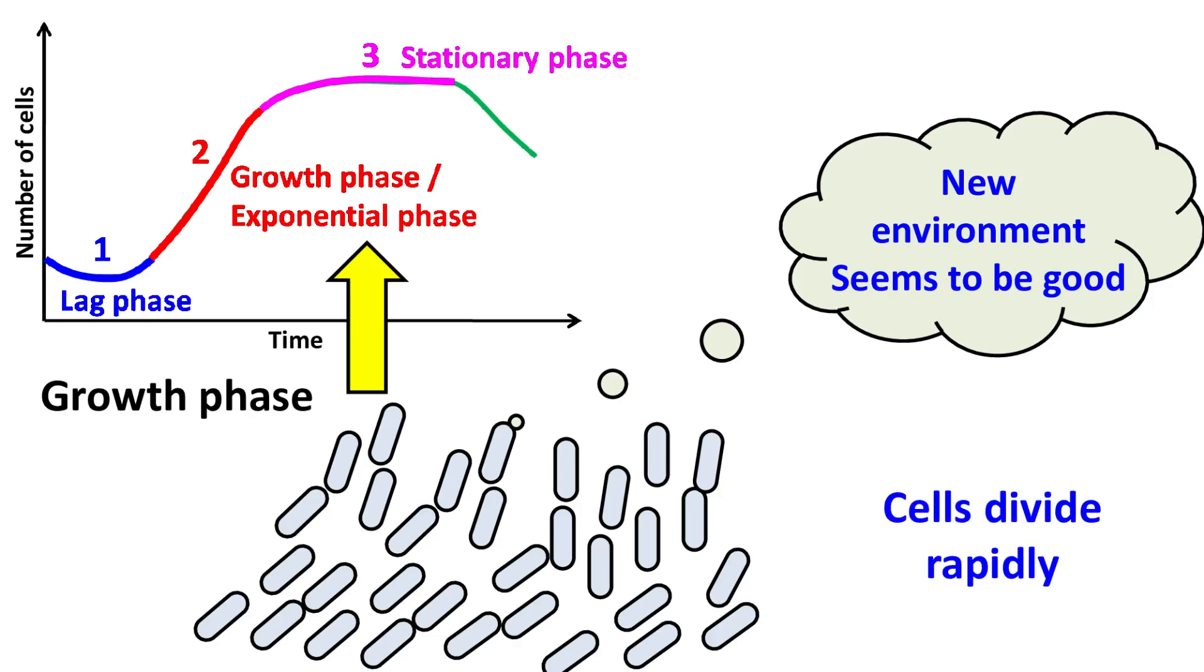Here the cells double their number at a constant time interval. Because of such rapid cell division during exponential phase, we usually plot the graph with the logarithmic scale.